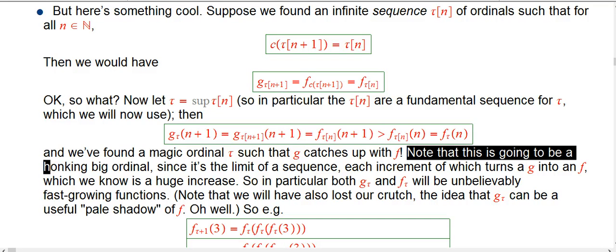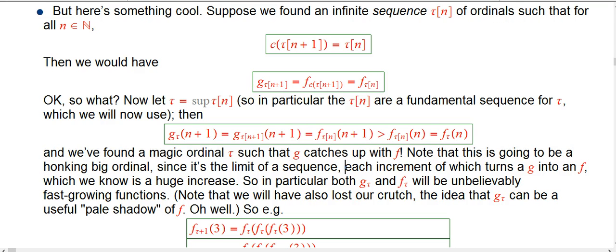Now, this tau is going to be a very big ordinal. It's the limit of this sequence of tau of n's, and each time you ratchet up the n, each of them turns a g function into an f function. We know that's an incredibly huge increase.